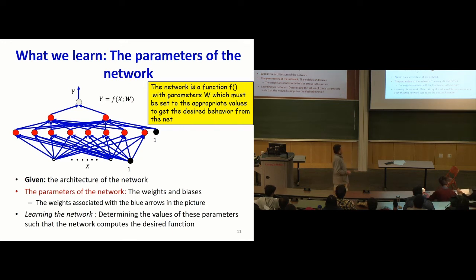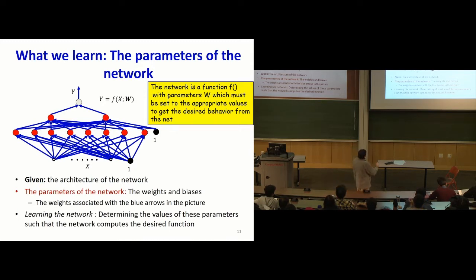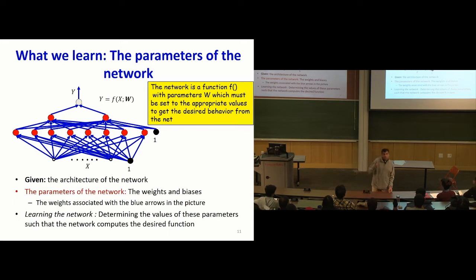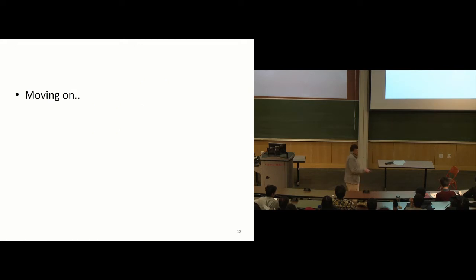The entire network can be viewed as taking some input X and producing some output Y — a function f(X). This function has parameters: the weights and biases of the individual neurons. So when I speak of learning a network, what I'm really speaking of is learning these weights and biases — the parameters of the network.